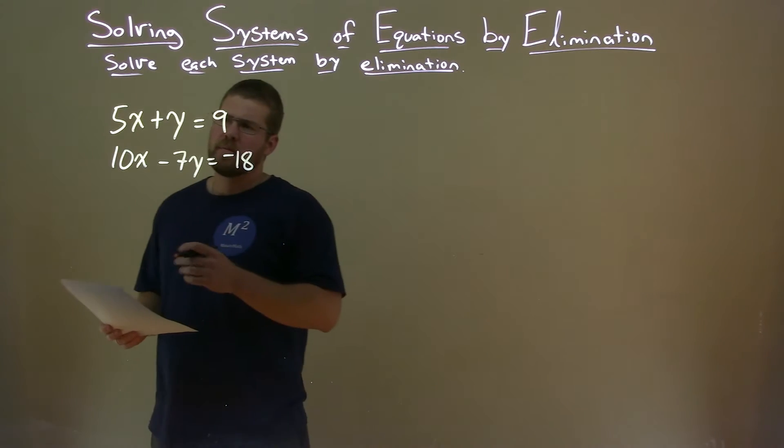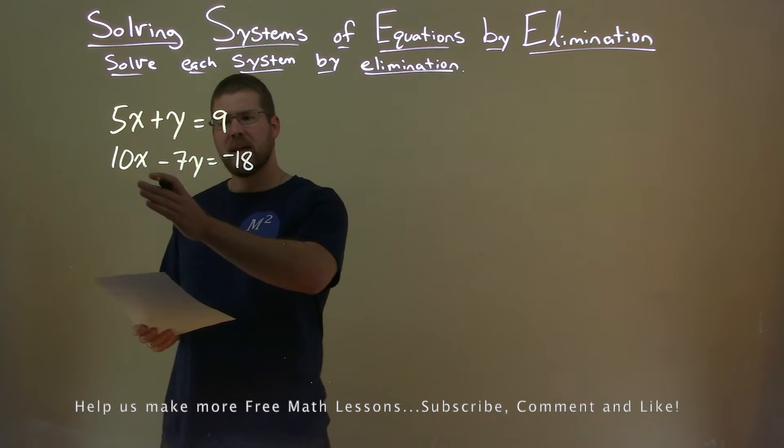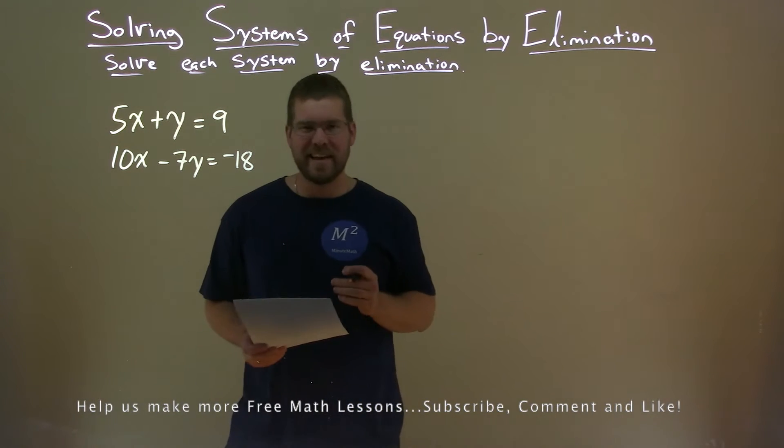So we're given this problem: 5x plus y equals 9, 10x minus 7y equals negative 18.